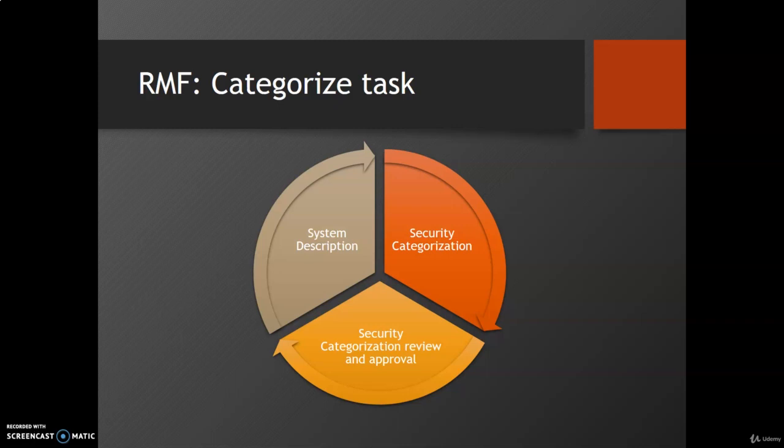This step has three tasks. First is system description, second is security categorization, and third is security categorization review and approval. Let's discuss about these tasks one by one.